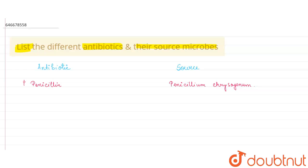Number two is Cephalosporin. Cephalosporin is produced by Cephalosporium acremonium. Now there are certain antibiotics which are produced by Streptomyces species.